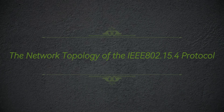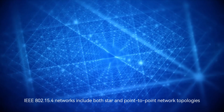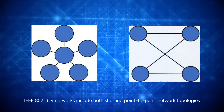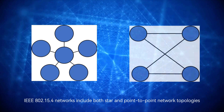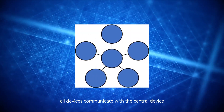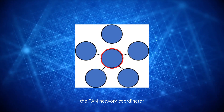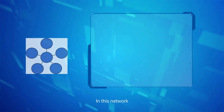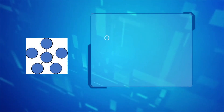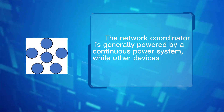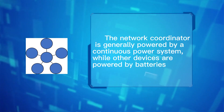The network topology of the IEEE 802.15.4 protocol includes both star and point-to-point network topologies. In a star structure, all devices communicate with the central device — the PAN network coordinator. In this network, the network coordinator is generally powered by a continuous power system, while other devices are powered by batteries.